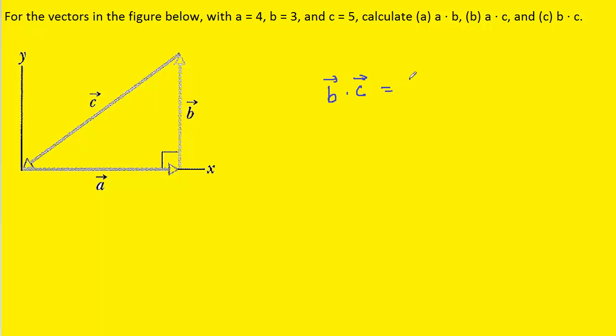We can now move on to part C, which asks for the dot product between vectors B and C. As before, we're going to replace vector C with the quantity negative the sum of vectors A and B. And then we'll go ahead and we'll distribute that minus sign.